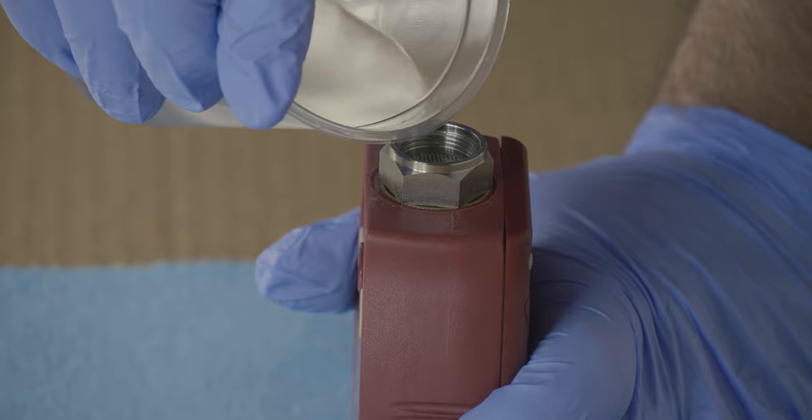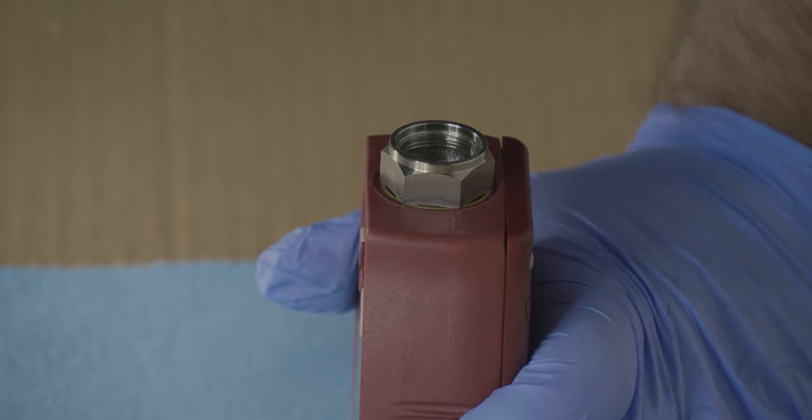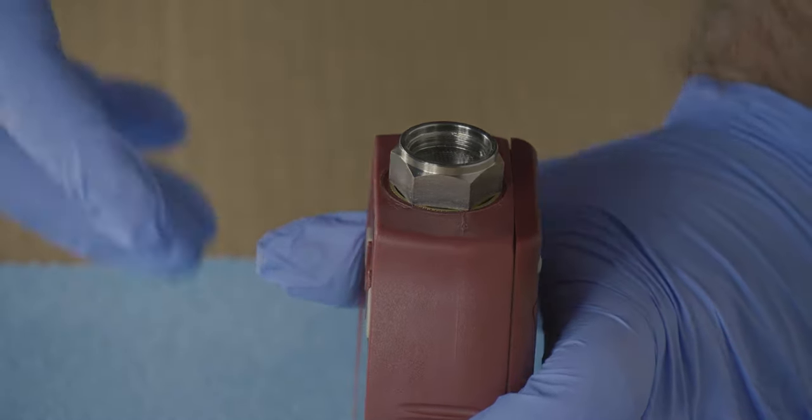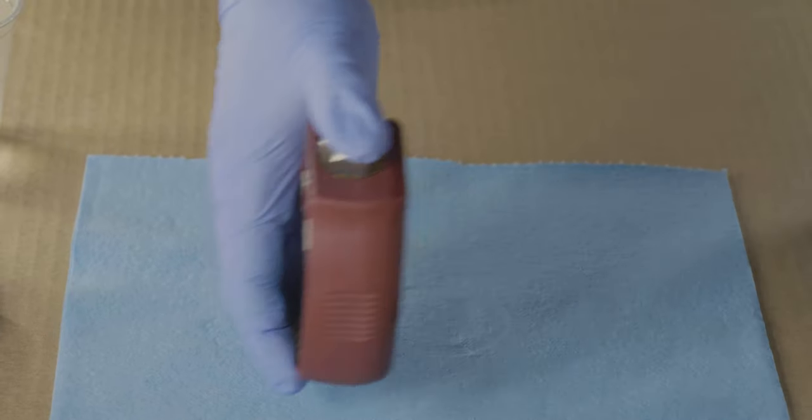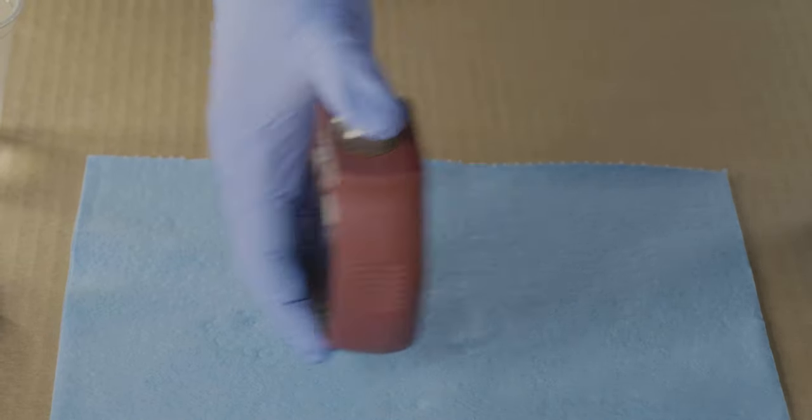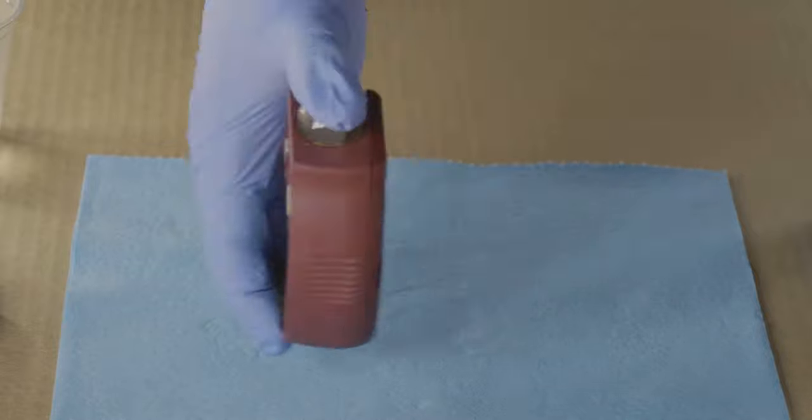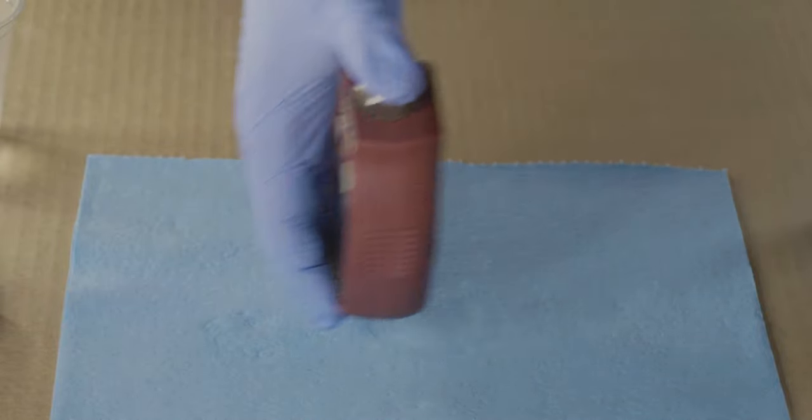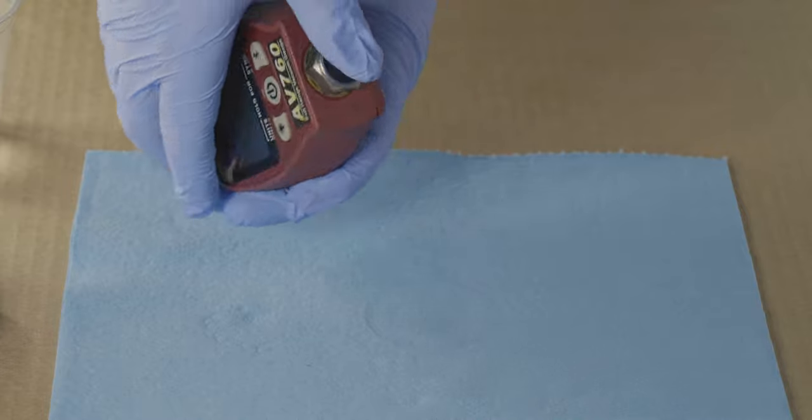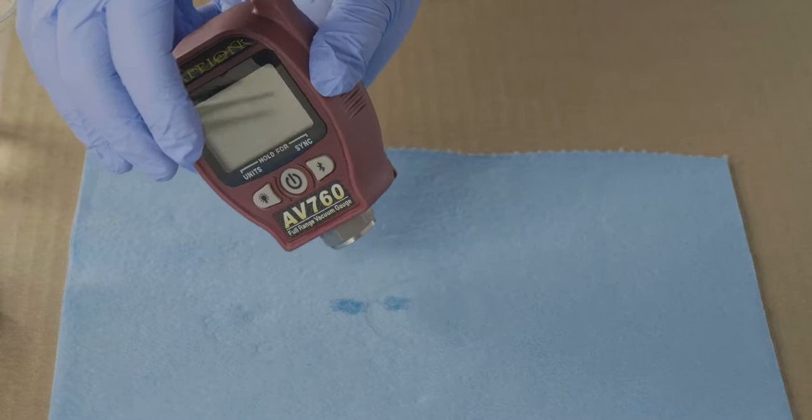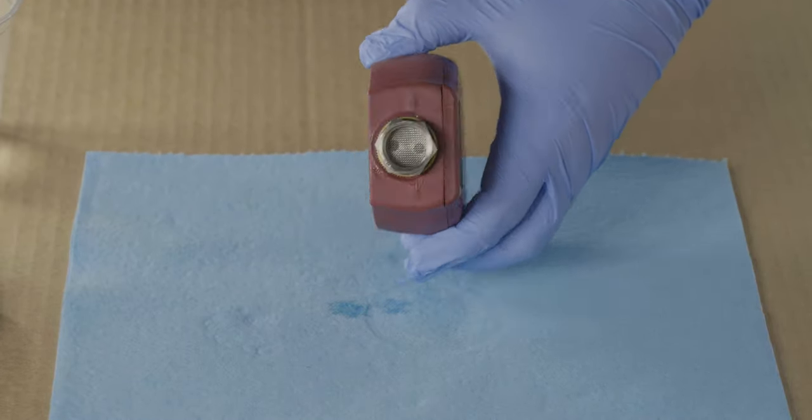To clean the gauge sensor, pour a small amount of the cleaner into the sensor housing. With a thumb covering the housing, gently shake the gauge for 5 to 10 seconds to agitate any contaminants. Then dump the cleaner out and let the gauge rest right side up for at least 15 minutes.